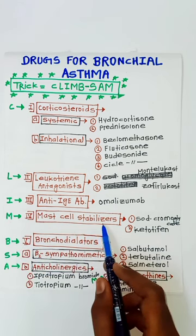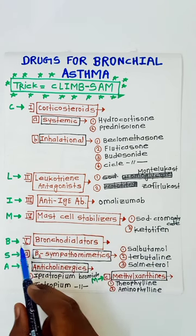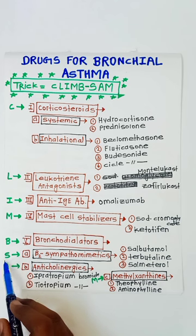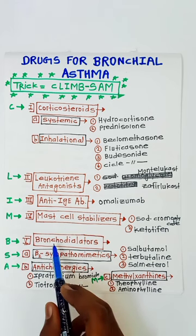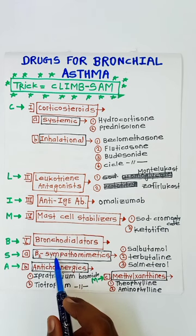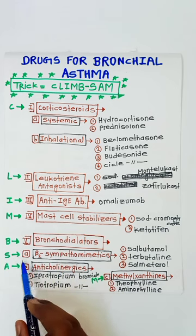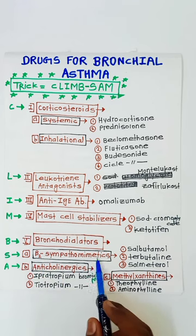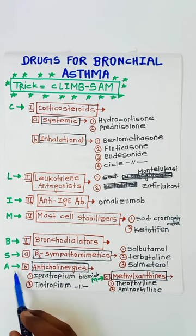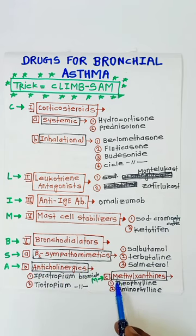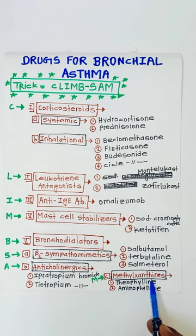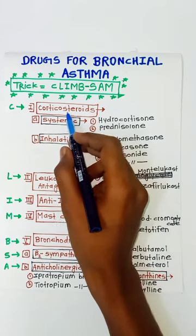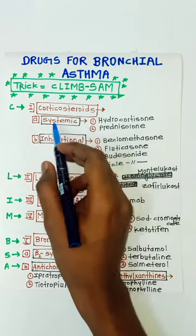Then SAM — in bronchodilators we have three subgroups: S for beta-2 sympathomimetics, A for anticholinergics, and M for methylxanthines. We will go one by one, starting with corticosteroids.